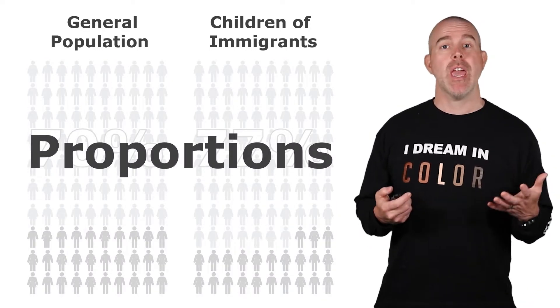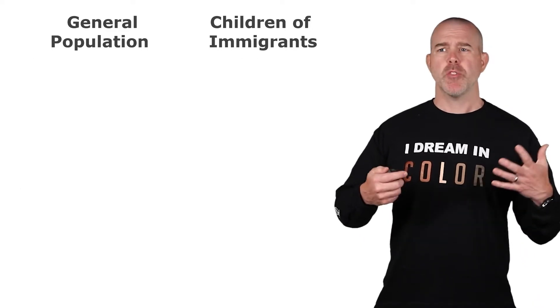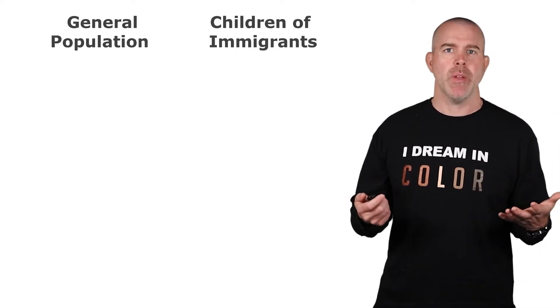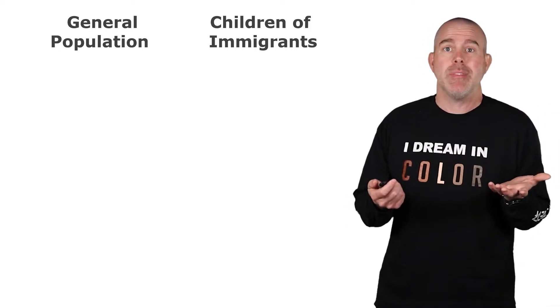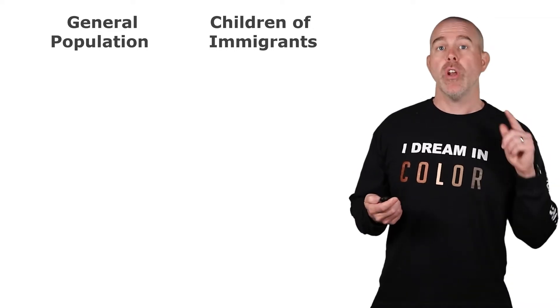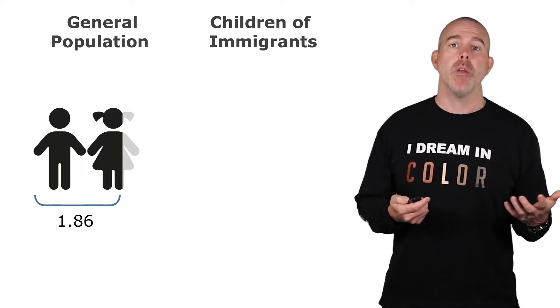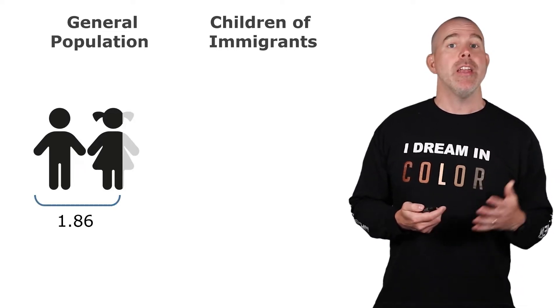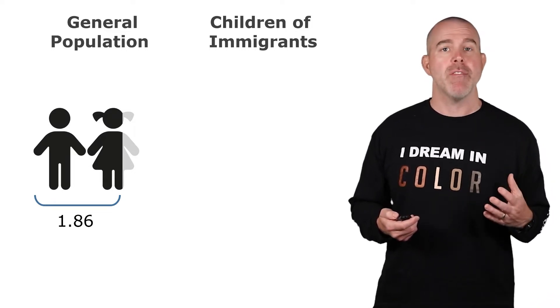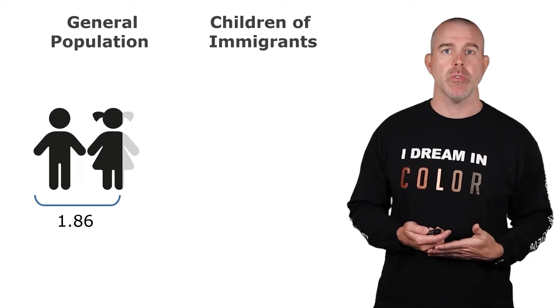What if instead of looking at proportions, we looked at something like average family size? There's this perception that immigrants who come tend to have larger families when they are here. So what if we had this database and we used the database to try to answer that question? According to the U.S. Census, the average number of children per family is 1.86. In our Children of Immigrants database, we don't have average number of children, but we do have average number of siblings of the individual. So we could then add one and get the average number of children.